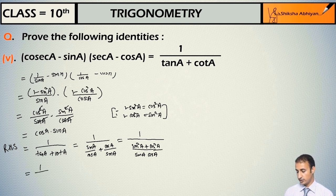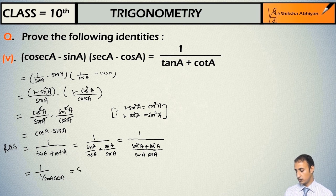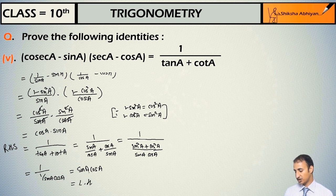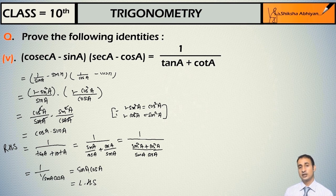So this becomes 1 upon (1 upon sin(a)·cos(a)), which equals sin(a)·cos(a). And this is equal to the LHS. So both sides are equal, and the identity is proved.